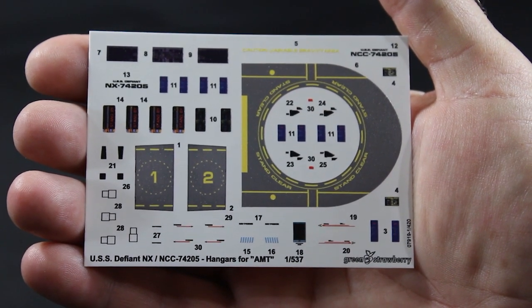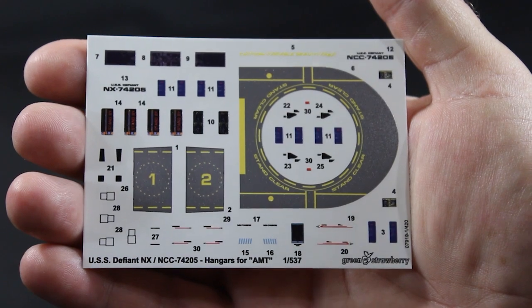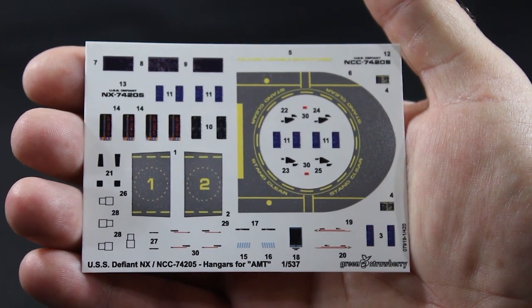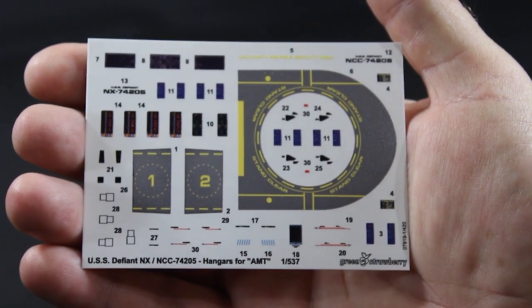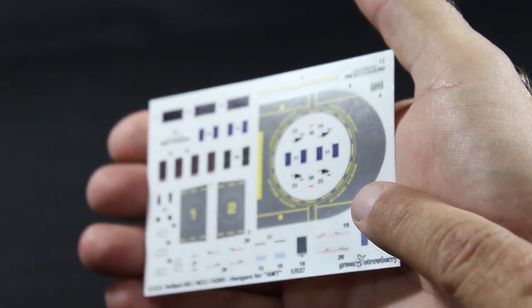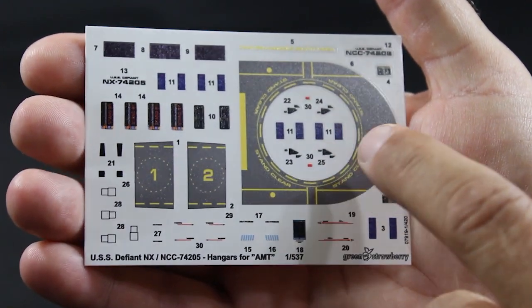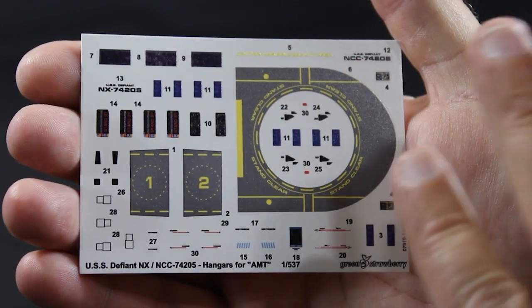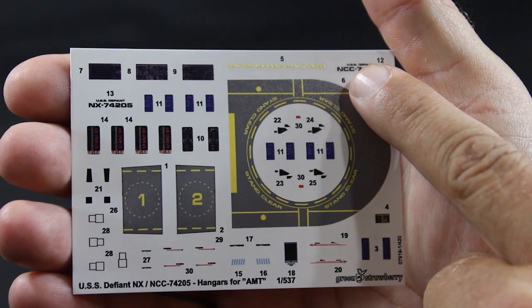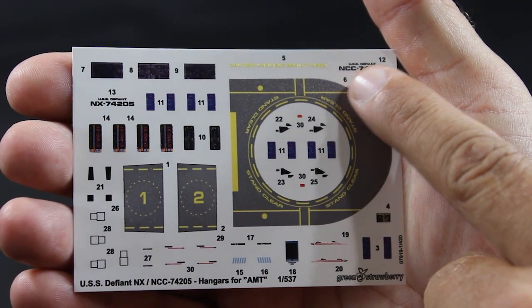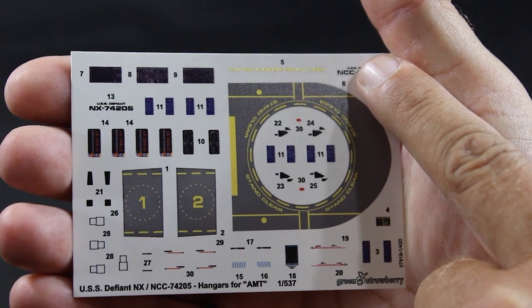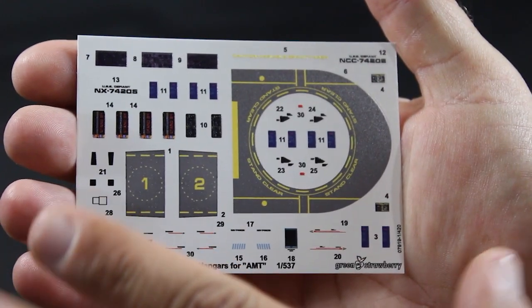Next up we'll take a look at the water slide decals. I haven't really seen any of these from Green Strawberry but these are very nice. There's not a lot of carrier film. The only place I saw a lot of carrier film is around the registration numbers, the NCC numbers, but they're not going to be able to get that small. They are very well saturated.